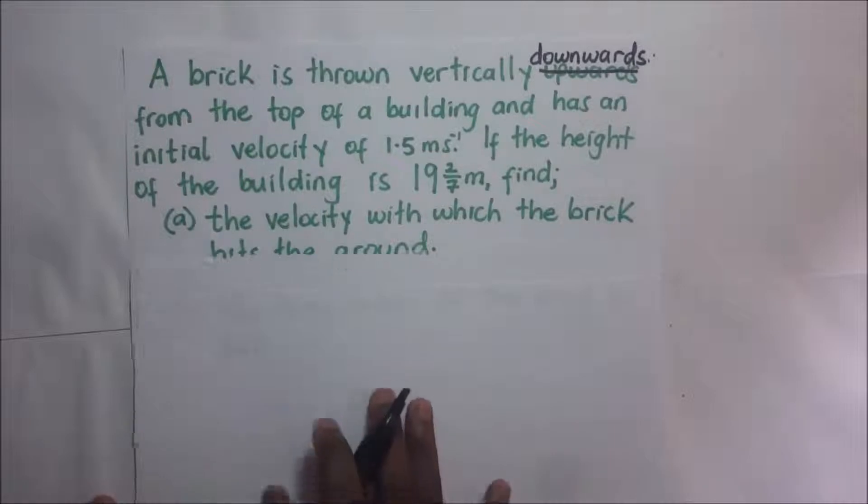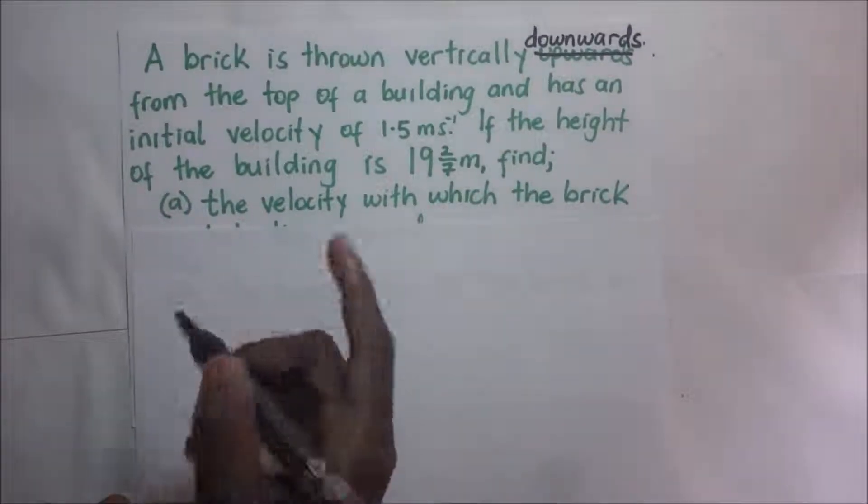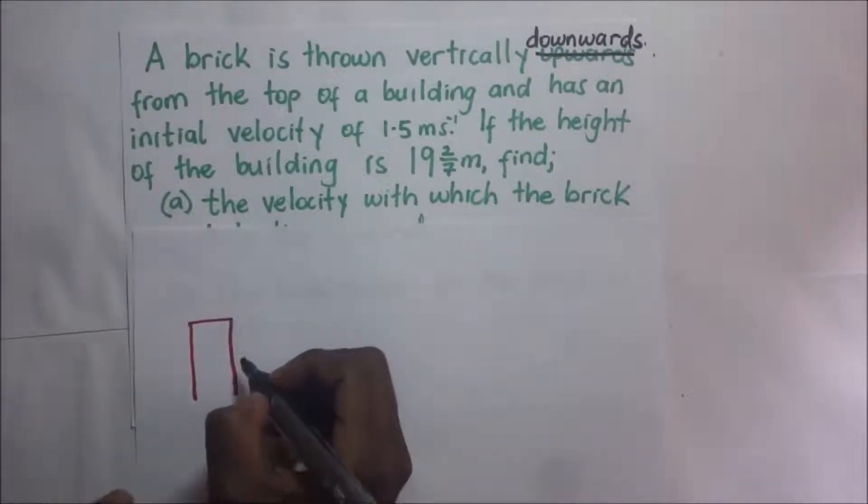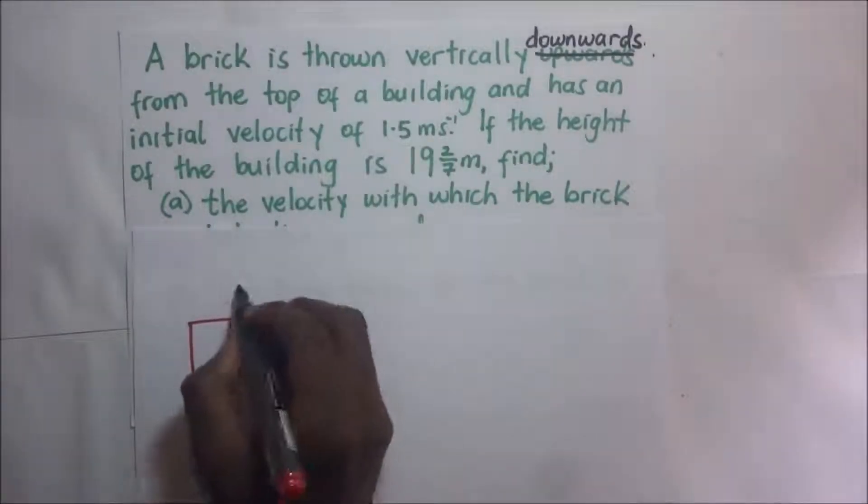Diagrammatically, a brick is thrown vertically downwards, so it's on top of a building, right? So we are having this being our building, and right on top here we are having a brick.